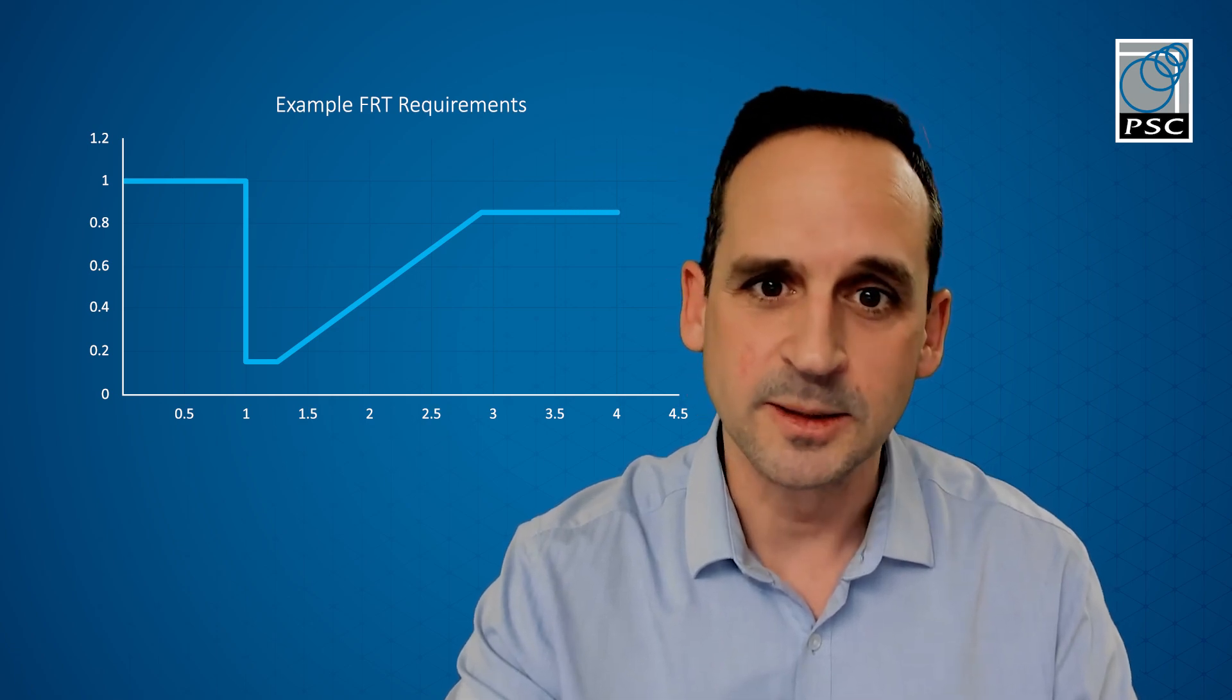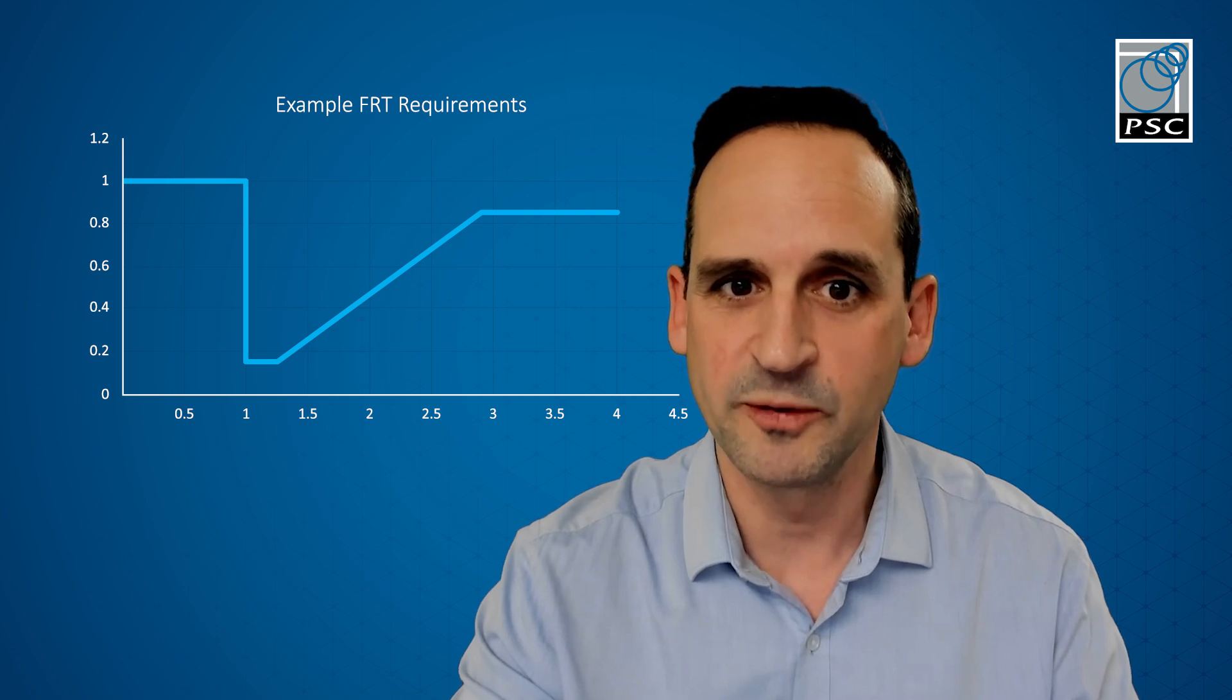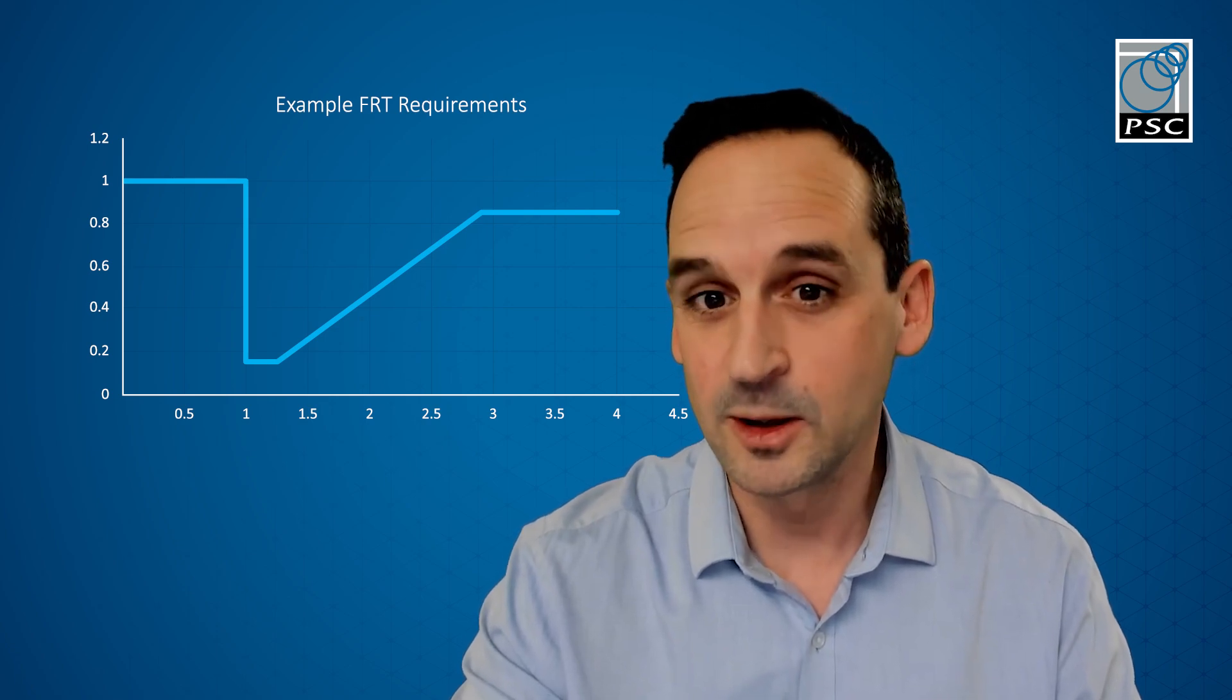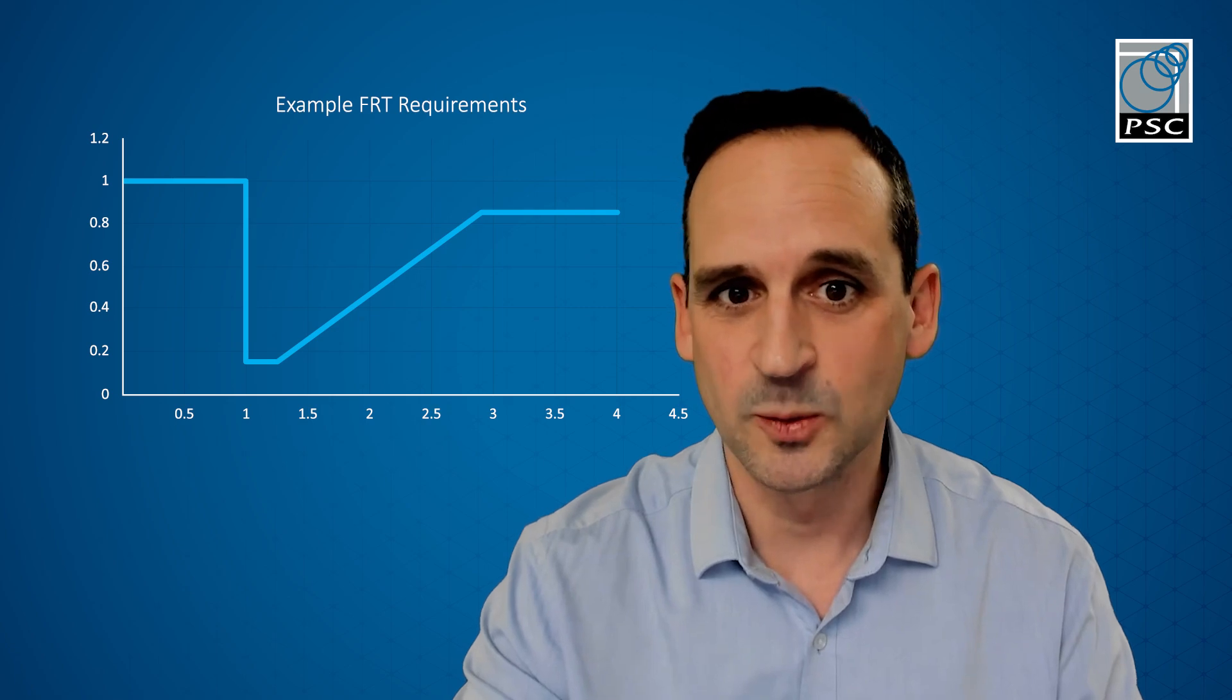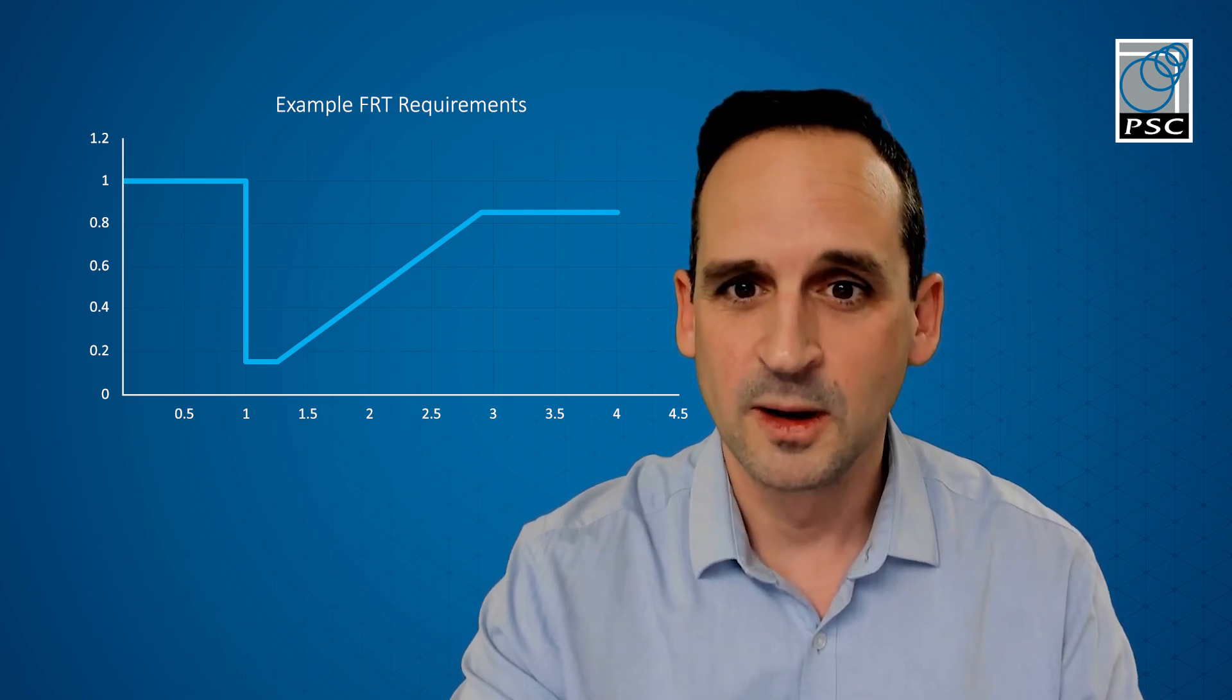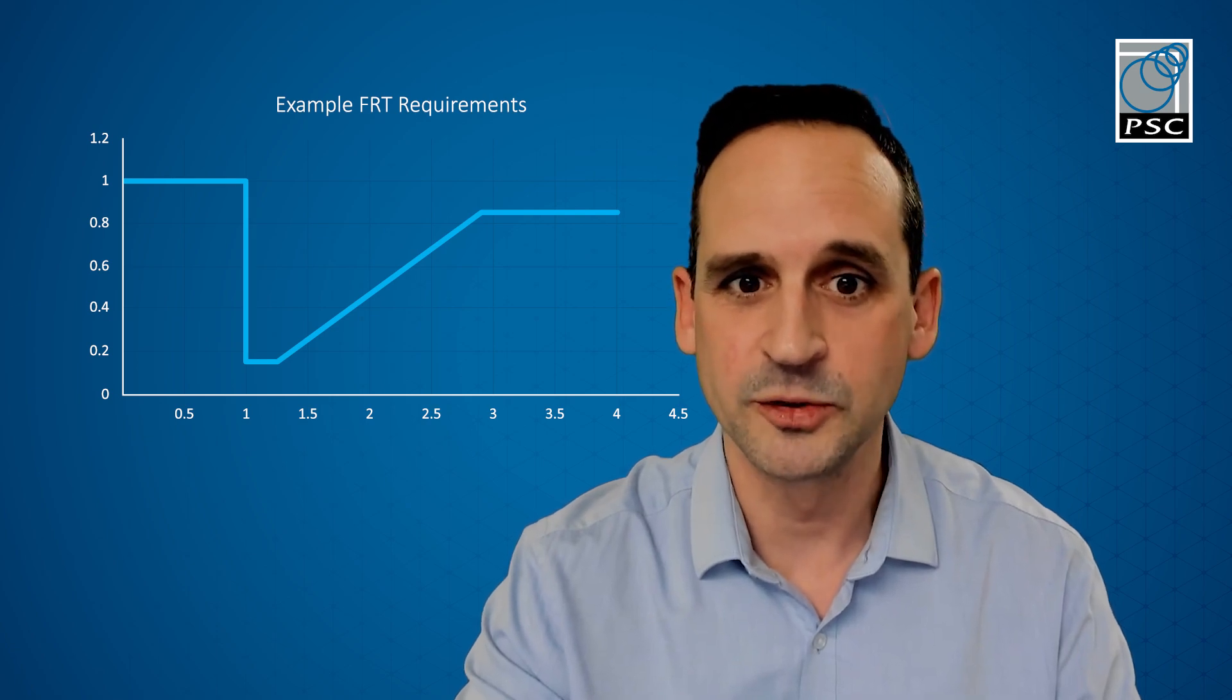What you can see here is a graph that represents a typical FRT requirement which would be found in the grid code. The figure you look at would depend on the type of fault and generator, whether it's synchronous, wind turbine or PV, and also which country you're working in as the details can differ slightly.